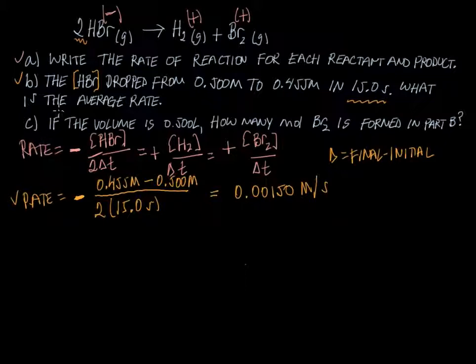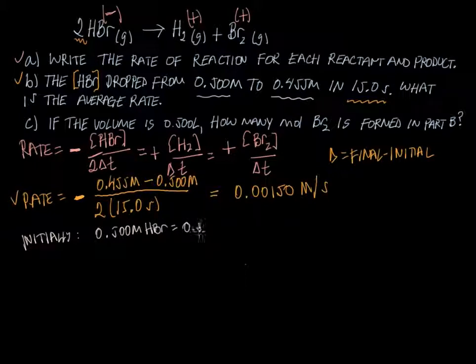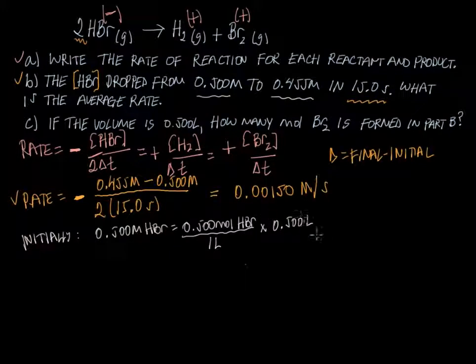Let's go ahead and calculate how many moles we have for each of these two quantities of HBr. So initially we have 0.500 M, right? That's the same thing as saying 0.500 moles of HBr per one liter. And part C says we have half a liter, so we can just multiply the 0.5 by 0.5 and get 0.25 moles of HBr.